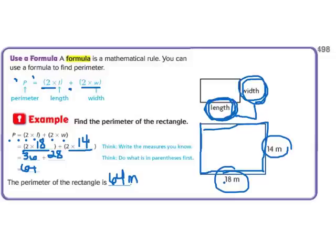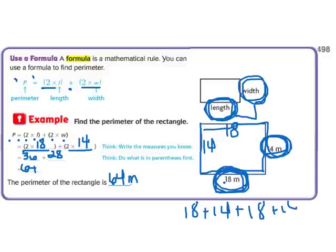If you cannot, for some reason, remember that formula, then just add all four sides. If this is 18, you know this is 18. If this is 14, you know this is 14. So 18 plus 14 plus 18 plus 14 will give you the same answer, 64.